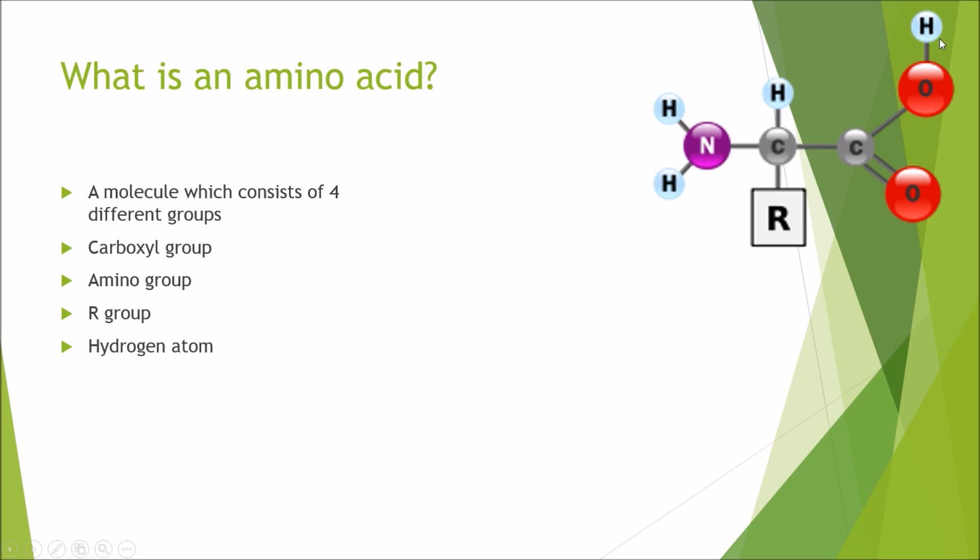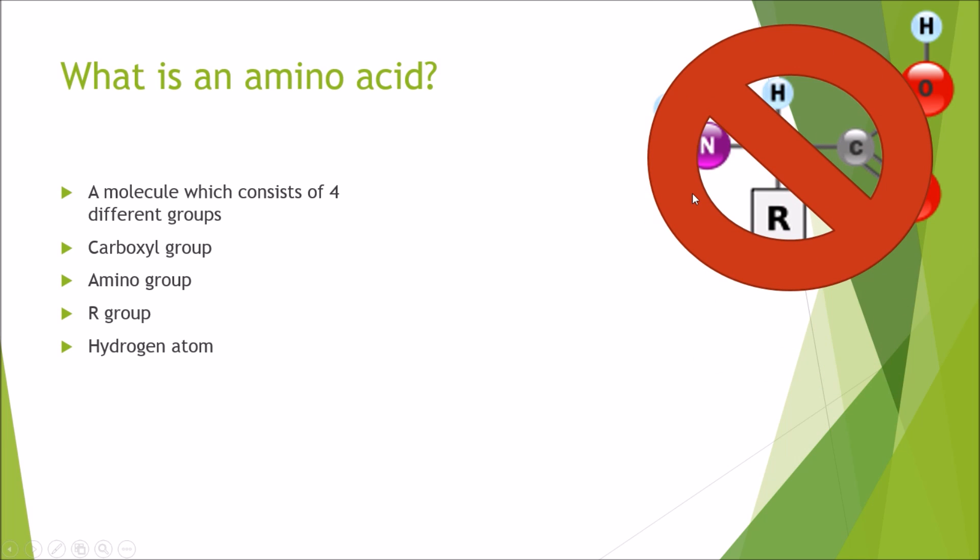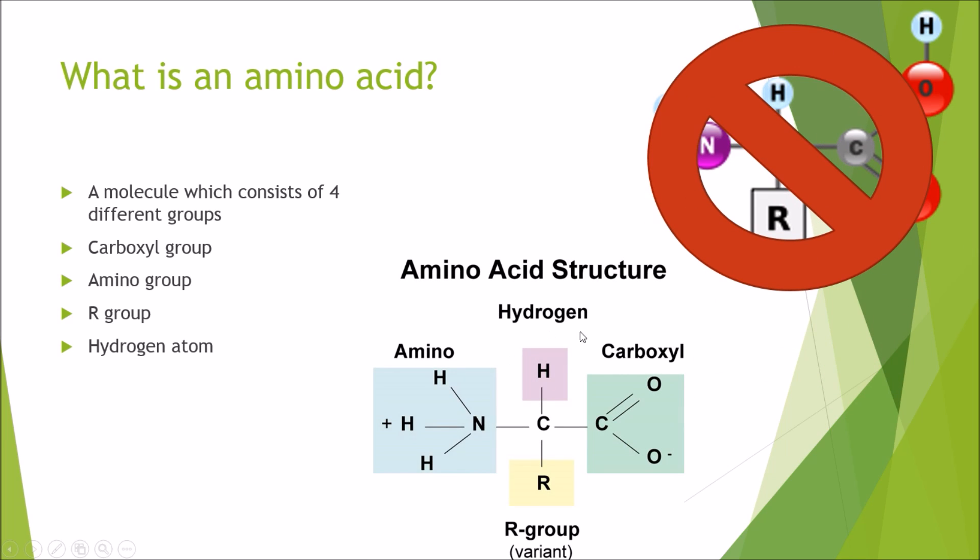But in reality amino acids don't actually exist like this, okay? So do not draw something like this. In reality they exist something like this. As you can see there is a very subtle difference. On the carboxyl group in this drawing here we see that we've still got the hydrogen attached to it.